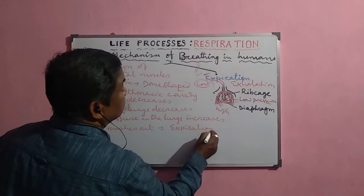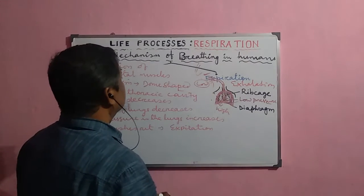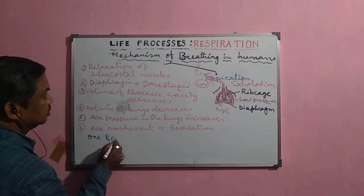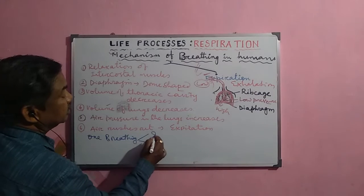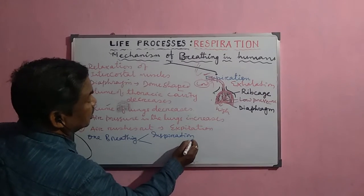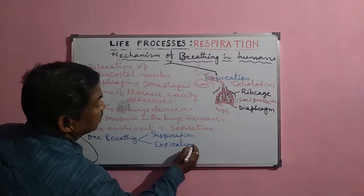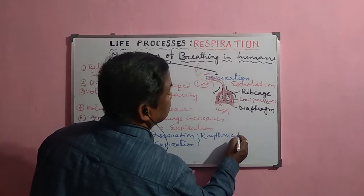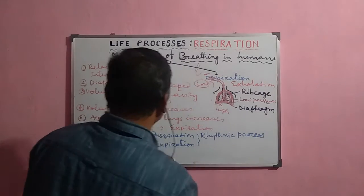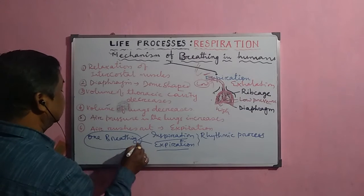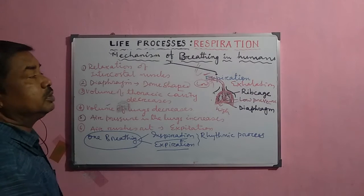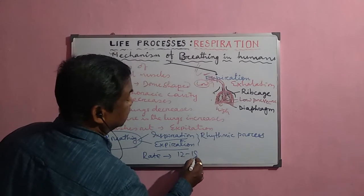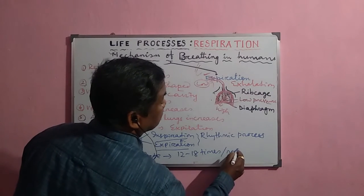One inspiration and one expiration together constitute one breath — it is a rhythmic process. The normal breathing rate in human beings is 12 to 18 times per minute. When air enters the lungs, the composition of atmospheric air is about 21% oxygen and 0.034% carbon dioxide.